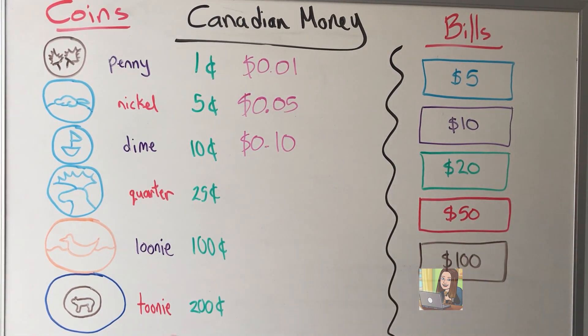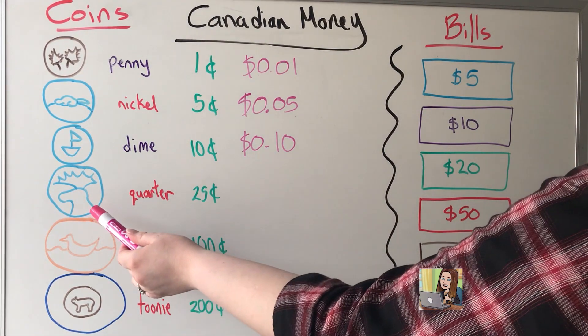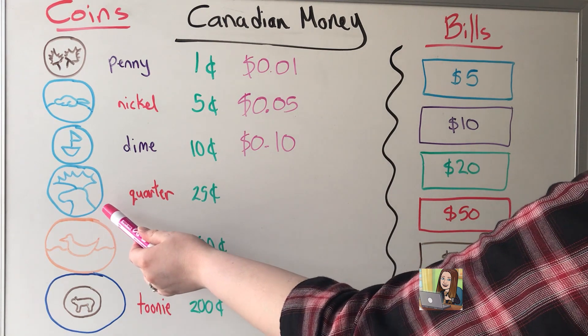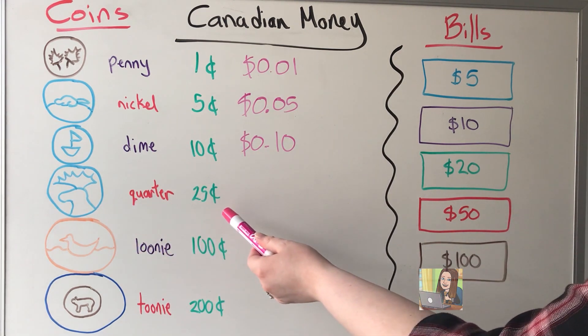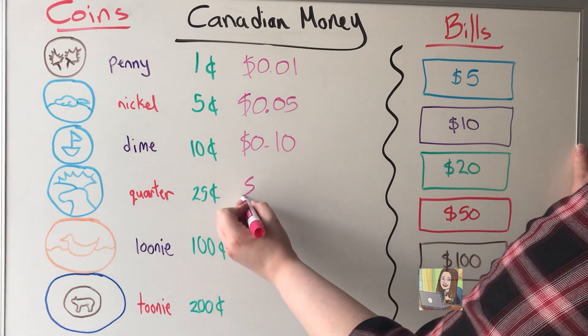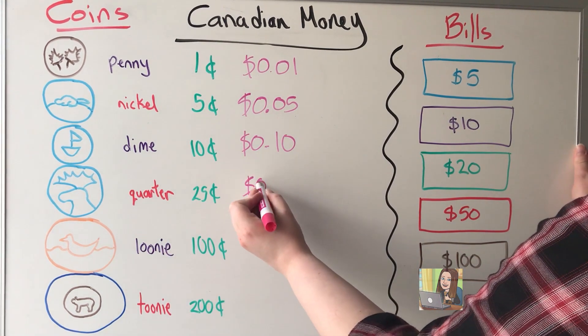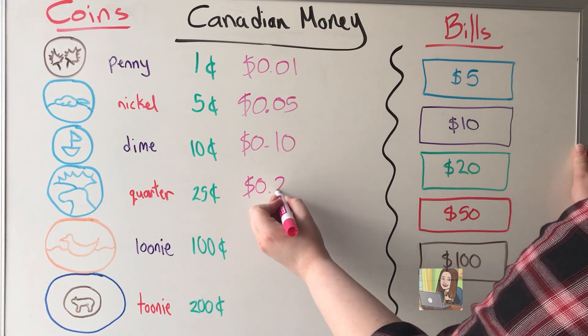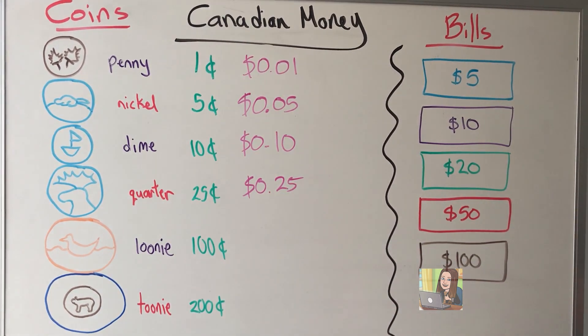The quarter, with the caribou on it, is worth 25 cents, or written in dollars, $0.25.